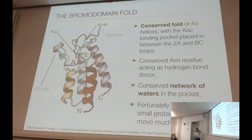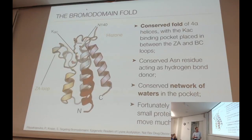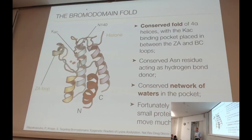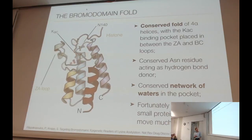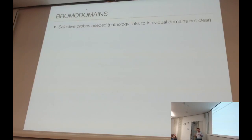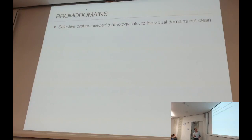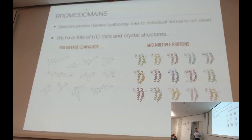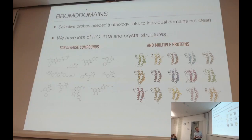Fortunately for us, it's quite a small protein, which helps the sampling issue. And also fortunately, it doesn't appear to move much, which is also rather handy for sampling. In the case of it being a drug target, although a few have been very well characterized, the links between the pathology and individual bromodomains is still not clear in all cases. So there's a desire to develop selective probes. We have lots of ITC — isothermal titration calorimetry — data and crystal structures, mainly from the SGC, for both diverse series of compounds and multiple proteins.